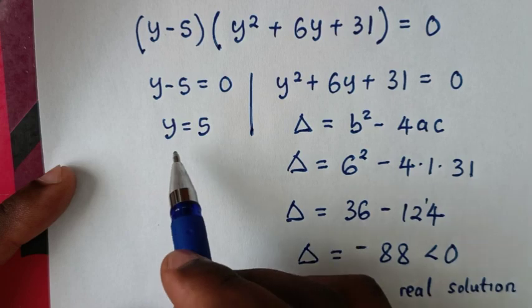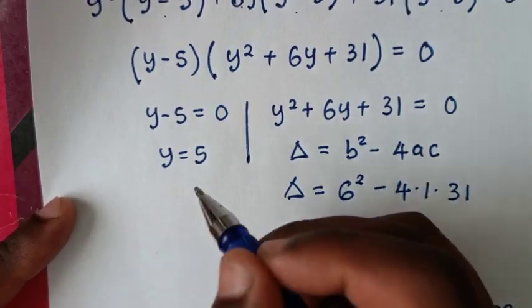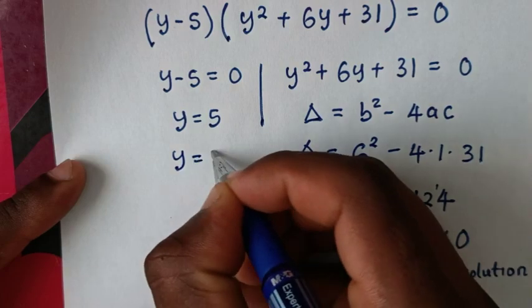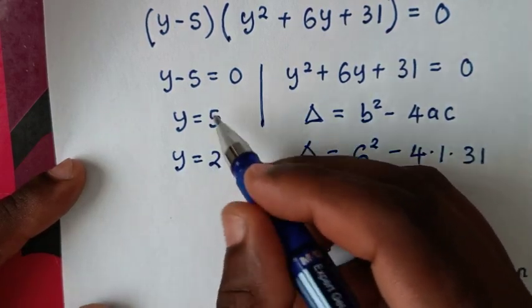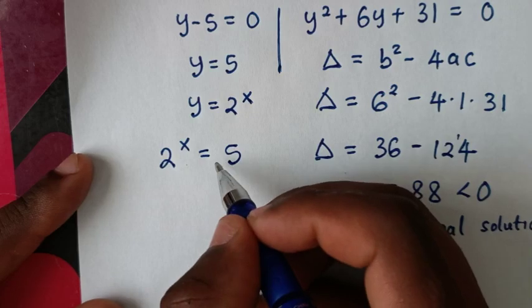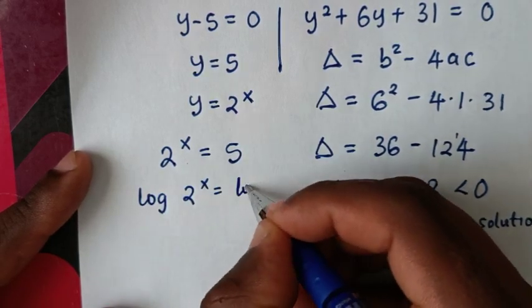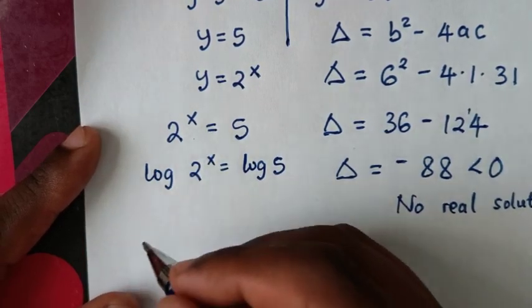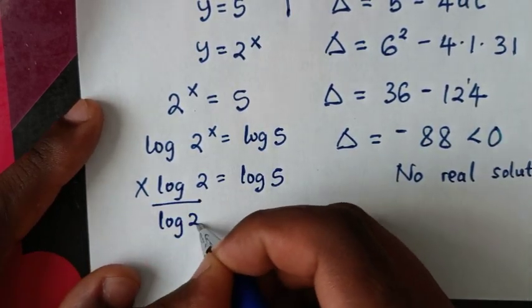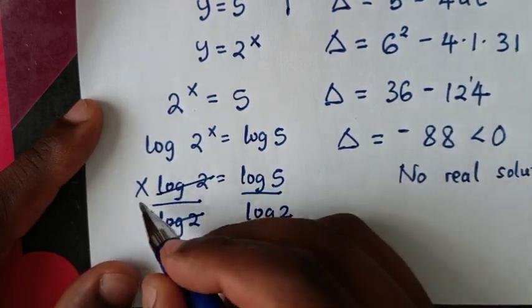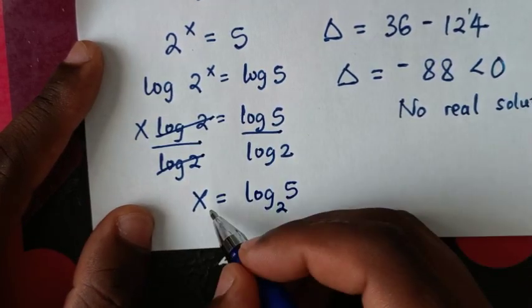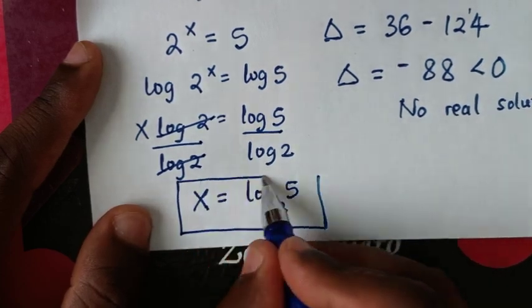Since there is no real solution from the quadratic, we use only y equals 5. Recalling that y equals 2^x, we compare: 2^x equals 5. Applying log to both sides gives log(2^x) equals log 5. The power x moves to the front: x times log 2 equals log 5. Dividing both sides by log 2, x equals log 5 over log 2, which is log base 2 of 5. This is the final answer.